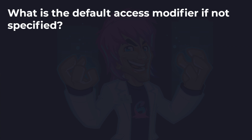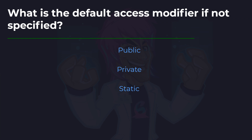Next up: what is the default access modifier if not specified? Again this was mentioned and this is something you should remember. You've got the choice of public, private, or static.